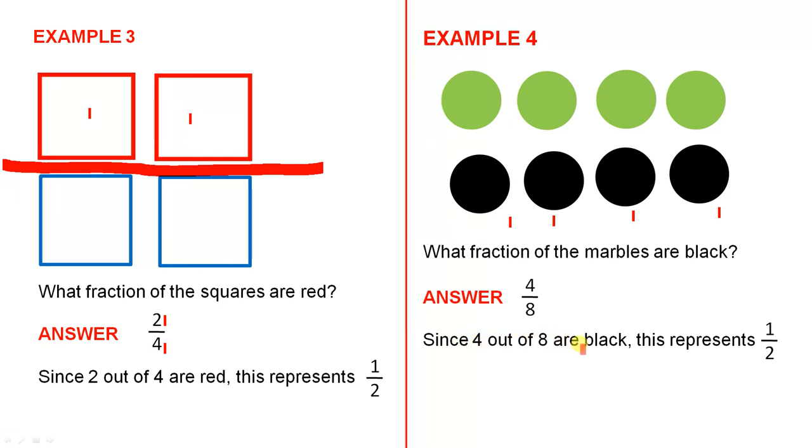Since 4 out of 8 are black, this represents one-half. If you divide the marbles into two groups, this is half the number of marbles that are black—half of the total group. That's why it's one-half.